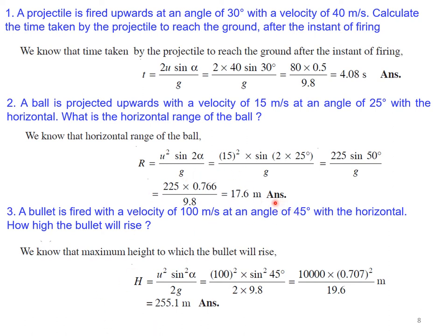Problem 3: A bullet is fired at 100 m/s at 45° to the horizontal. How high will the bullet rise? Using H = u²·sin²(α)/(2g) = 100² × sin²(45°) / (2 × 9.8) = 255.1 meters.